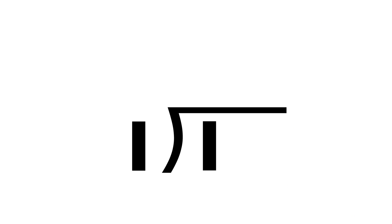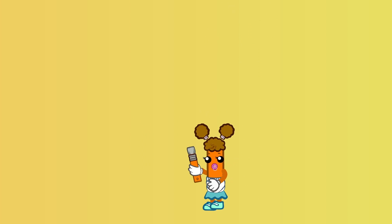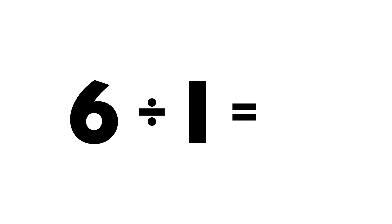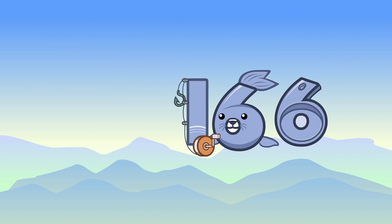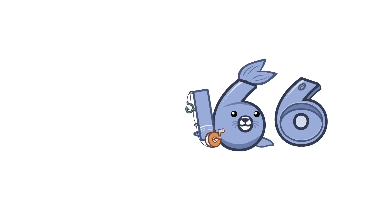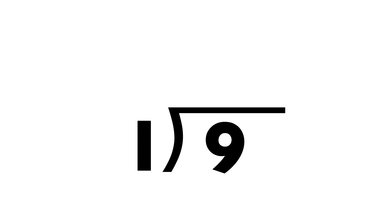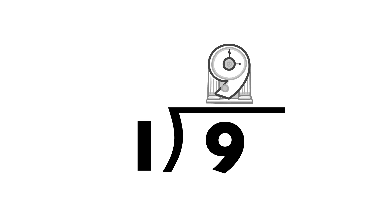One divided by one equals... One. Six divided by one equals... Six. Nine divided by one equals... Nine.